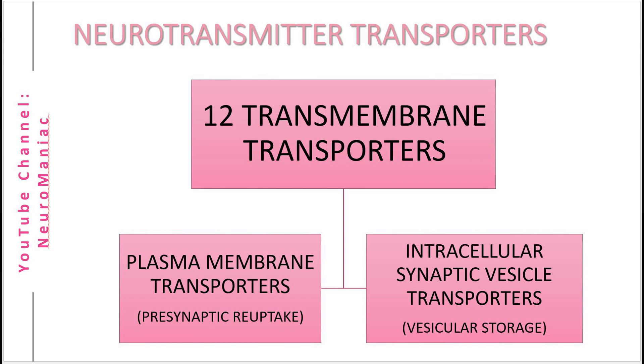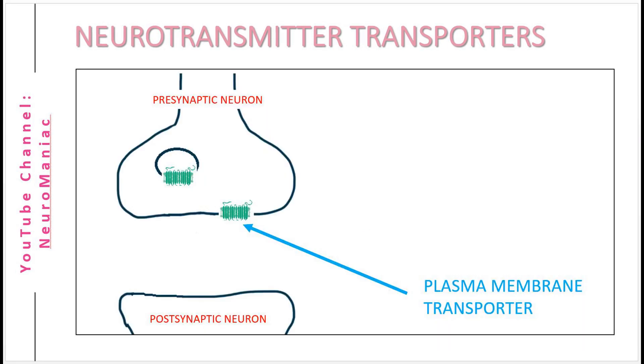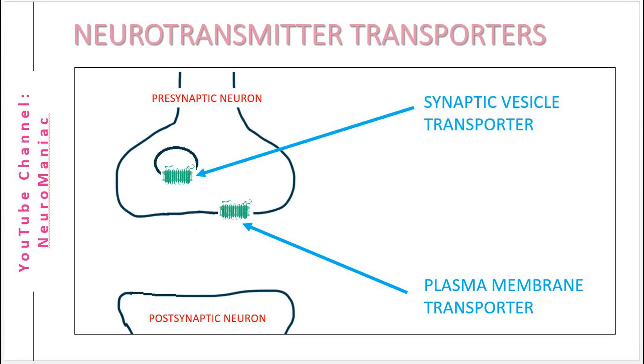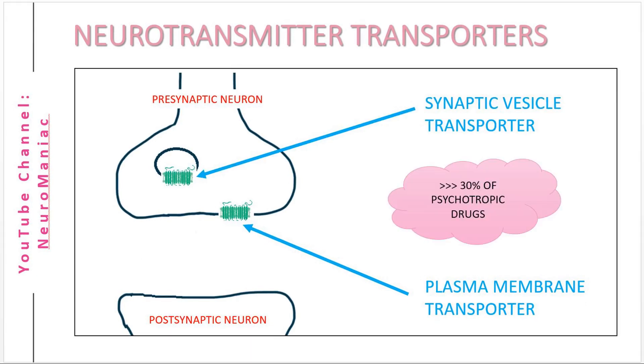With respect to neurotransmitters, there are two types of transporters. One for the presynaptic reuptake and the other for vesicular storage. They're so significant that they both account for about 30% of targets for psychotropic drugs.